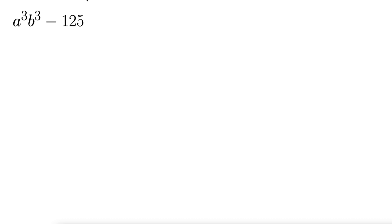Here we want to factor a³b³ - 125. This is a difference of cubes, so we use our formulas for sum and difference of cubes. Remember, these are the SOAP formulas which remind us what the signs are.